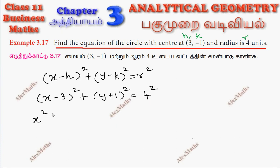This is expansion: x square minus 6x plus 9. This is expansion: y square plus 2y plus 1 equal to 16. The final form is x square plus y square equal to x term equal to y term equal to numbers.